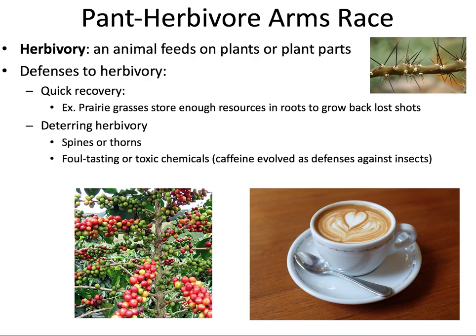Plant-herbivore arms race: herbivory is when an animal feeds on plants or plant parts. Herbivores also have to deal with plant defenses because plants can defend themselves. Some plants can recover very quickly — prairie grasses, for example, have enough resources in their roots that if eaten by large herbivores like buffalo, they can grow back. Other plants have defenses like spines or thorns, or foul-tasting and toxic chemicals. In fact, caffeine evolved as a defense against insects — it actually paralyzes and kills many insects that try to feed on the plant. It's a natural pesticide, though we think of it differently in our coffee.